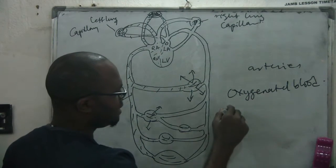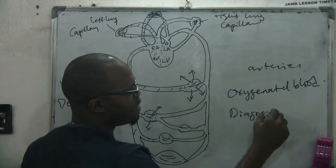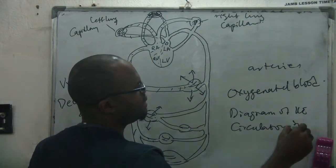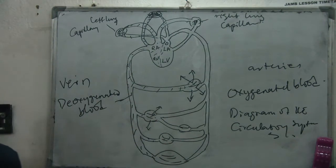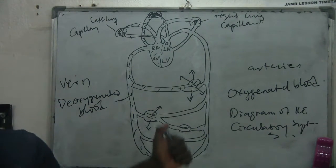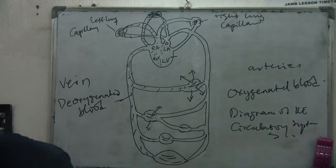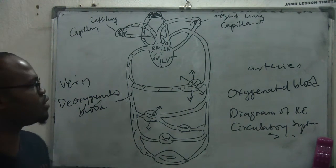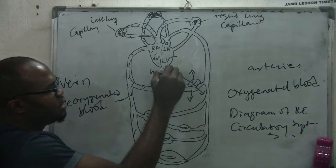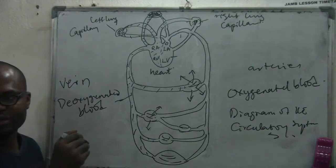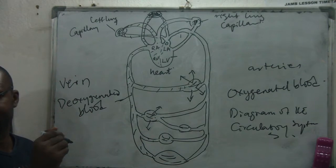This is the diagram of the circulatory system in human beings, in mammals. It is not the fully labeled one, but you can label it afterwards. When talking about the circulatory system, you talk about the heart, you talk about the blood vessels, and you talk about the blood itself. Those are the things that make up the circulatory system.